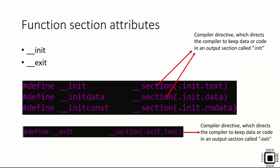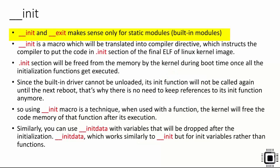When you use the __init macro with any function, that function's code will be placed in a section called .init in the final kernel image. Similarly, __exit is another C macro which expands to a compiler directive that directs the compiler to keep data or code in an output section called exit. Init and exit make sense only for static modules — that is, built-in modules.